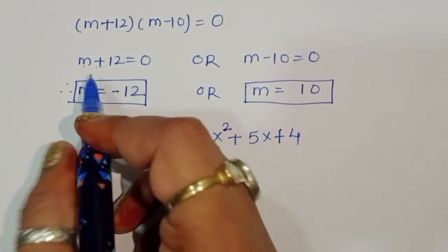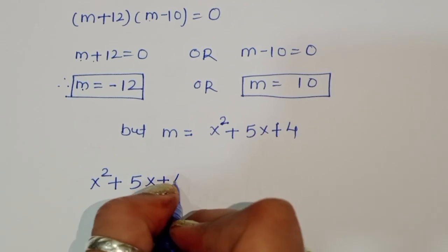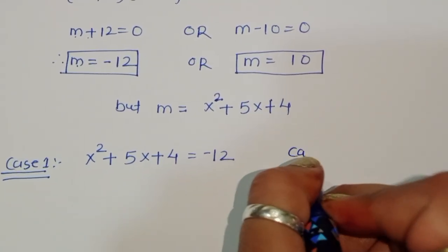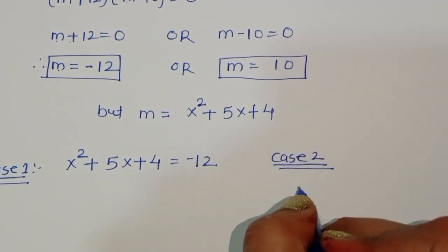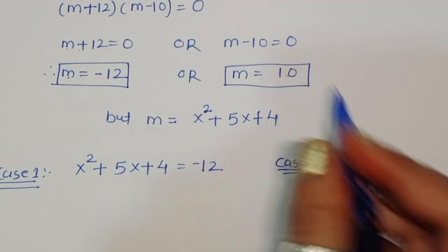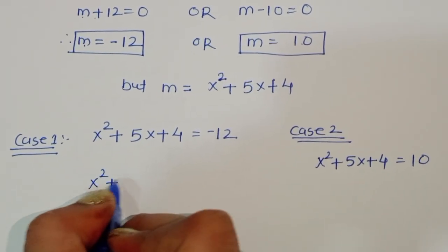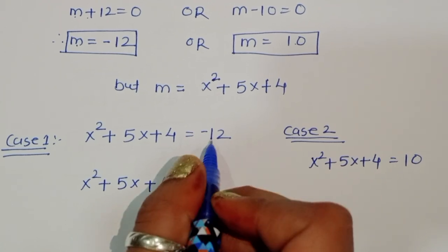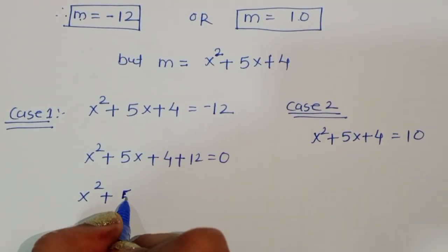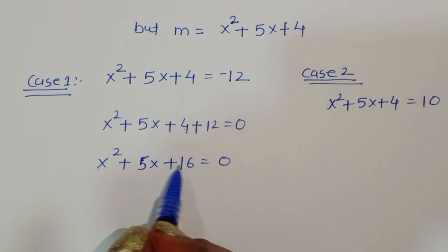Recall m = x² + 5x. Case 1: x² + 5x + 4 = -12, so x² + 5x + 16 = 0.